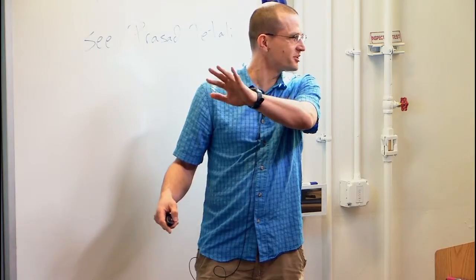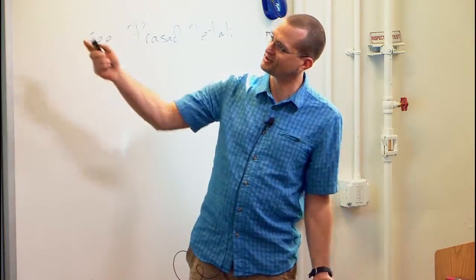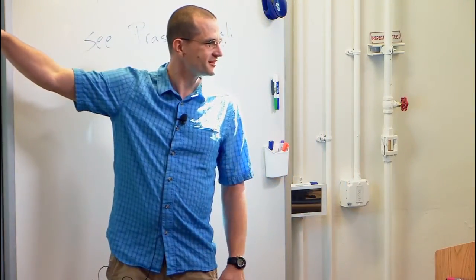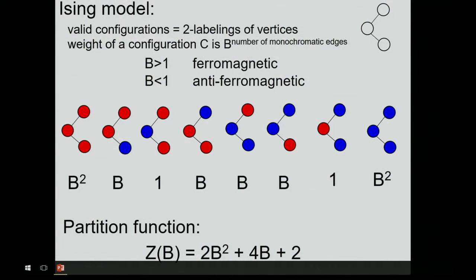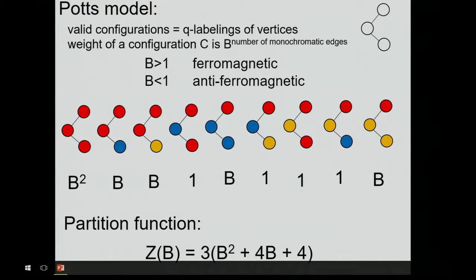Everybody saw these models, so just two quick slides. The Ising model labels vertices by plus or minus, red or blue. The weight of a configuration is B to the number of monochromatic edges, and we are interested in sampling from the distribution. The Potts model is the same thing except you have more than two colors — maybe three, maybe four — and again you count the number of monochromatic edges. The weight of a configuration is B to the number of monochromatic edges.